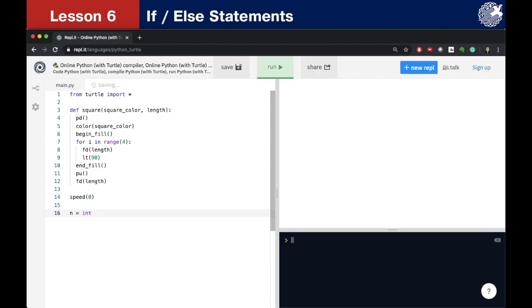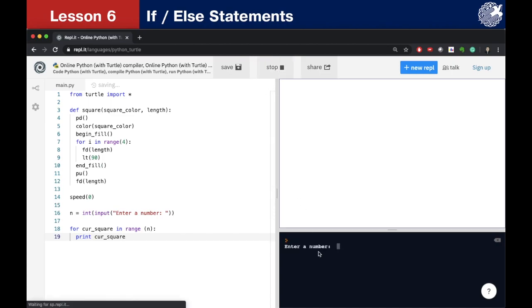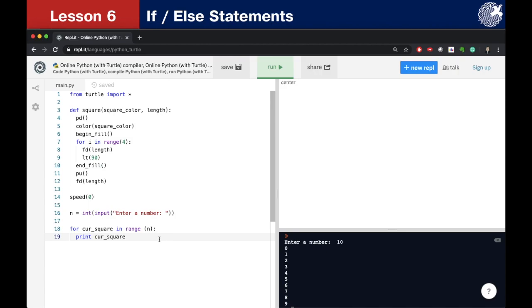Here we have our square function. Now let's get a value for the n. After it, I will call my for loop. To do so, I will type for current square in range n. The value of car square is starting from 0 to n-1 inclusive. Let's check it. In the loop, I will write only one command which will print the value of car square in each iteration of the loop. So if n is equal to 10, it will print values from 0 to 9.